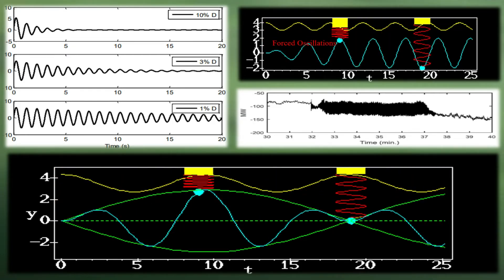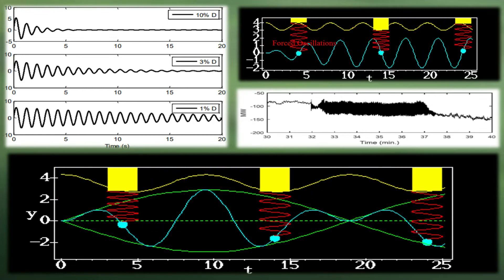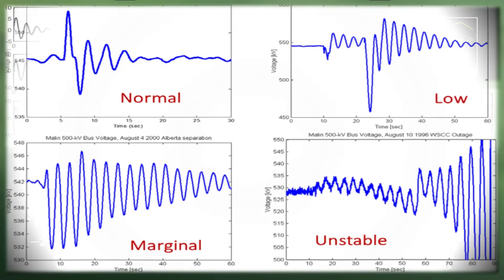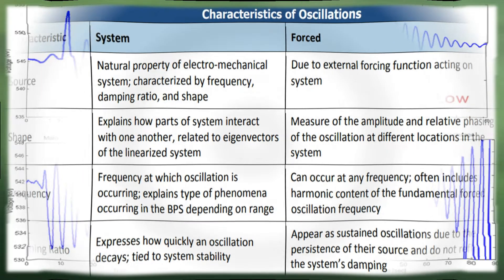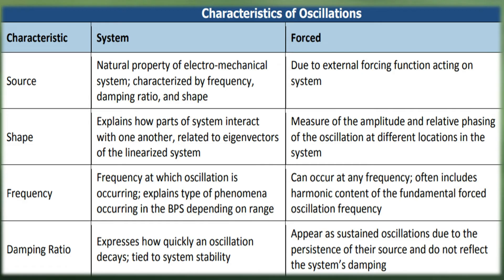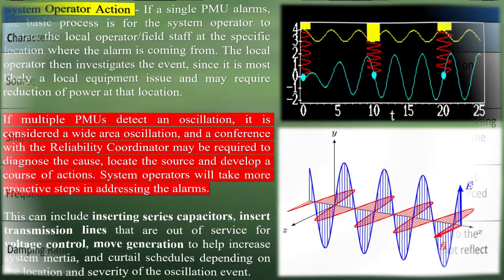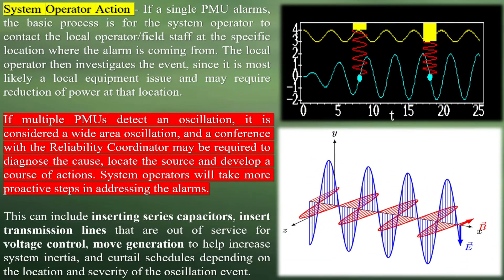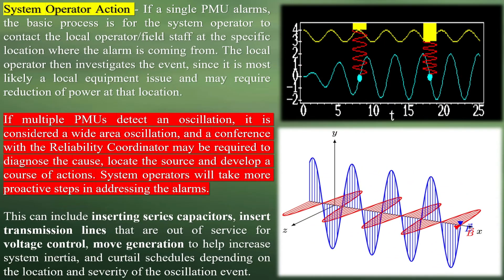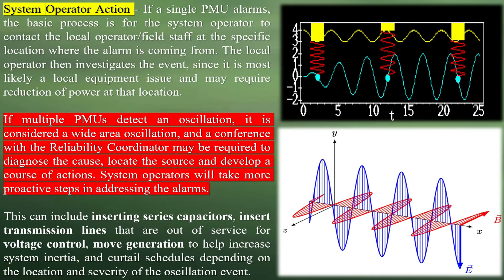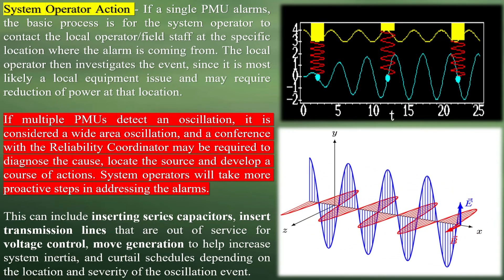System operator action: if a single PMU alarms, the basic process is for the system operator to contact the local operator or field staff at the specific location where the alarm is coming from. The local operator then investigates the event, since it is most likely a local equipment issue and may require reduction of power at that location. If multiple PMUs detect an oscillation, it is considered a wide area oscillation, and a conference with the reliability coordinator may be required to diagnose the cause, locate the source, and develop a course of actions.